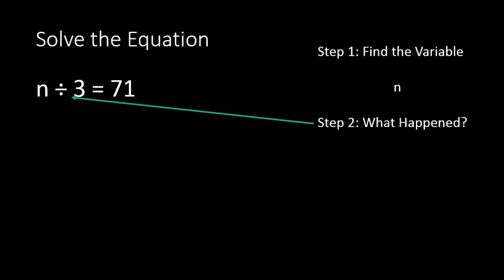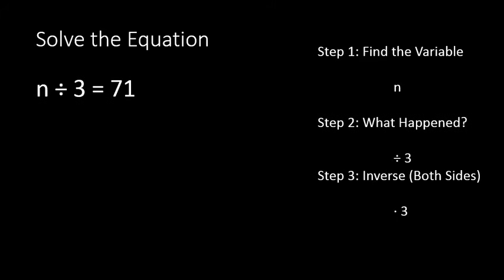What happened to n or what's attached to n? Divided by 3. n divided by 3. So what is the opposite or the inverse of dividing by 3? Multiplying times 3 is the inverse. So now what we will do is multiply times 3 on both sides of this equation. Notice I use the dot to represent multiplication. That's common. You'll see that more and more as you get into higher levels of math classes. So n divided by 3 times 3 leaves us with just n on the left side. And on the right side of the equation, we have 71 times 3, which gives us 213.